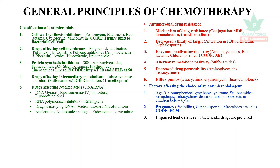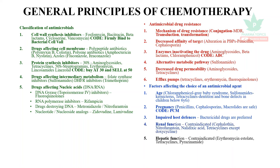Impaired host defenses — HIV, transplant patients — require bactericidal drugs rather than bacteriostatic. Renal function — contraindicated drugs include Cephalothin, Nitrofurantoin, Nalidixic acid, and Tetracyclines — except Doxycycline, which can be used. Hepatic function — certain drugs are avoided in hepatic dysfunction: Erythromycin estolate, Tetracyclines, Pyrazinamide.